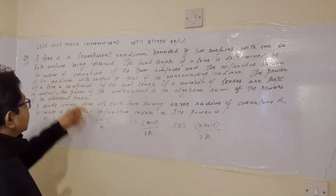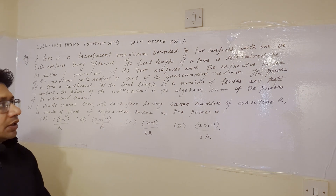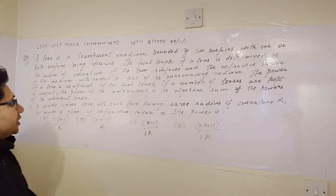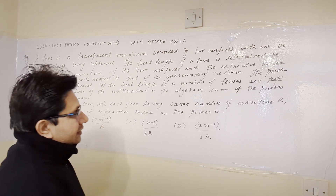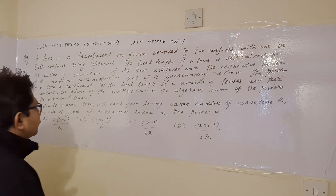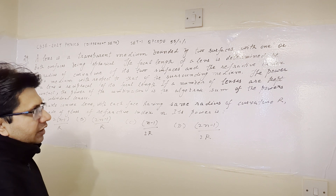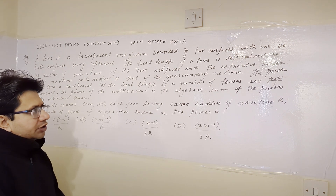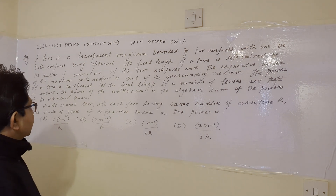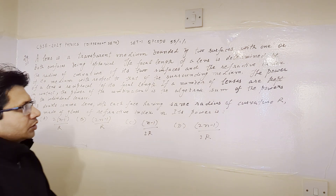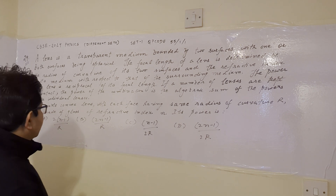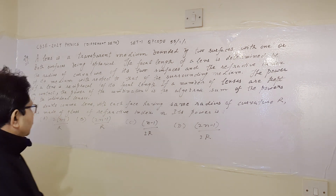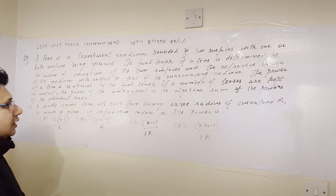Now the question is: a lens is a transparent medium bounded by two surfaces, with one or both surfaces being spherical. The focal length of a lens is determined by the radius of curvature of its two surfaces and the refractive index of its medium with respect to that of the surrounding medium. The power of a lens is reciprocal of its focal length. If a number of lenses are kept in contact, the power of the combination is the algebraic sum of the powers of the individual lenses.